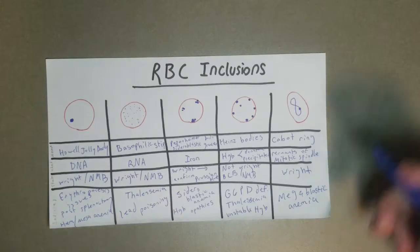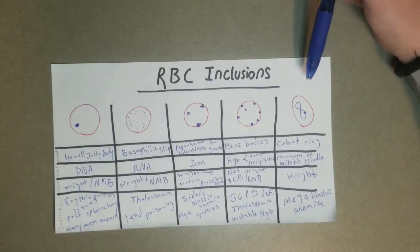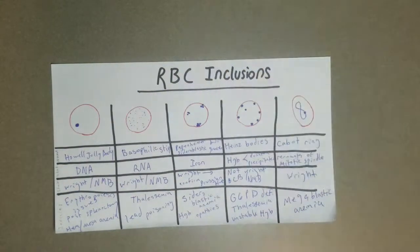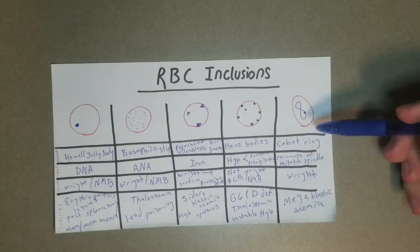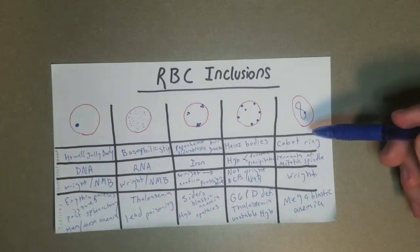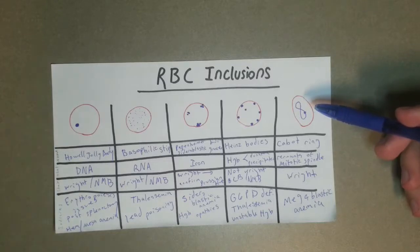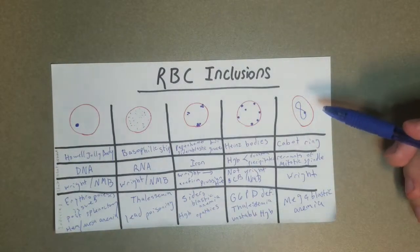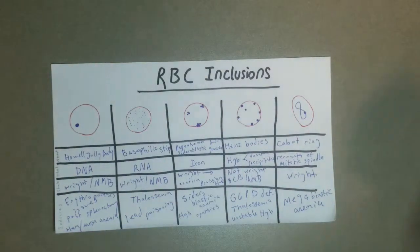Alright, so these are the common ones. Five of them there. If it's not one of these, it could be an artifact or some kind of parasite. It could be malaria, babesia, trypanosoma, or something like that. And if it's not one of these or one of those, it could be something else obscure. Yeah, hope this helps. Thank you.